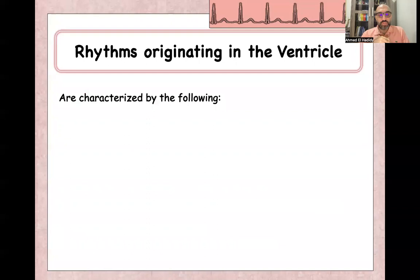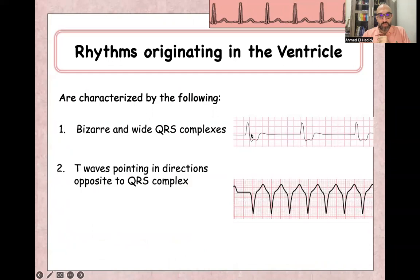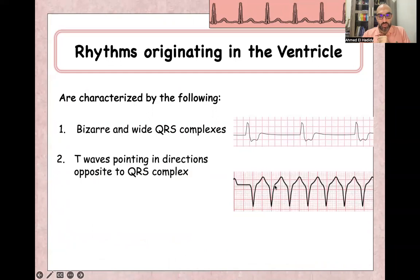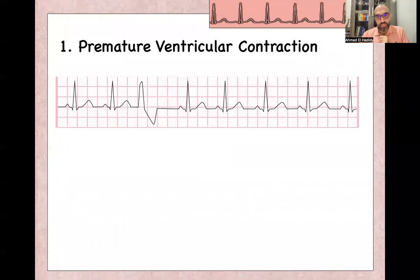Moving to the second part: rhythms originating from the ventricles itself. These are characterized by bizarre shape QRS and wide QRS. As you can see, this is a wide QRS. The T-wave points in the direction opposite to the QRS, which is called discordance. So if QRS is negative, the T-wave will be positive; if QRS is positive, the T-wave will be negative. Also, QRS is randomly related to P-waves, if you can see any P-waves.